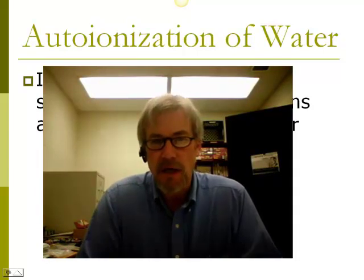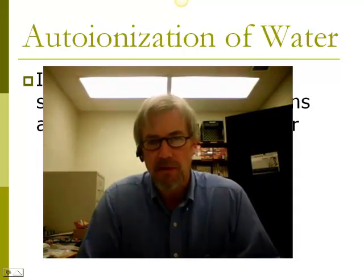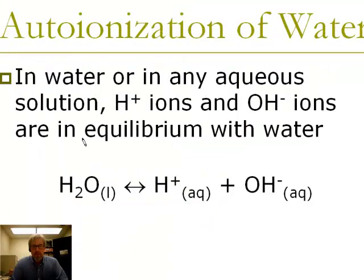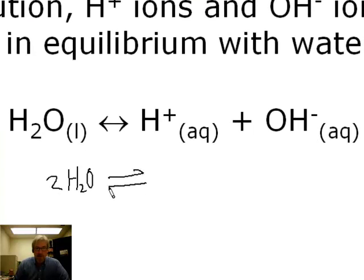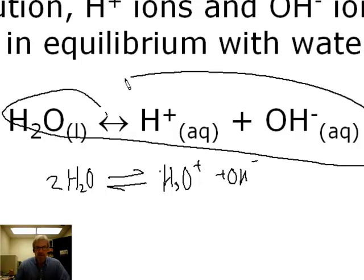At some point we're going to have to do some calculations because pH is a fairly numerical idea. In water, or actually in any aqueous solution, water is functioning as an acid and as a base. It's decomposing reversibly to form H⁺, which makes it a weak acid, and OH⁻, which makes it a weak base. In reality, two H₂O molecules decompose reversibly to give hydronium ion H₃O⁺ and OH⁻, but the convenient model I'll use most of the time is just H⁺ plus OH⁻.